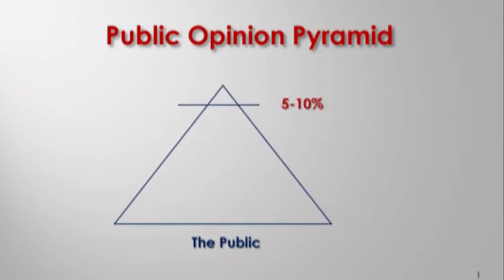The first segment would be 5% to 10% of the public. The percentages I'm giving you are based on a lot of survey research data, so there is an empirical basis for choosing these numbers. At the very top of the pyramid is the 5% to 10% of the population. Who are these people? These are people who read newspapers and they read them pretty thoroughly. These people are fully aware of the crisis of the day. If you give them tests of knowledge of history, they will perform exceptionally well.